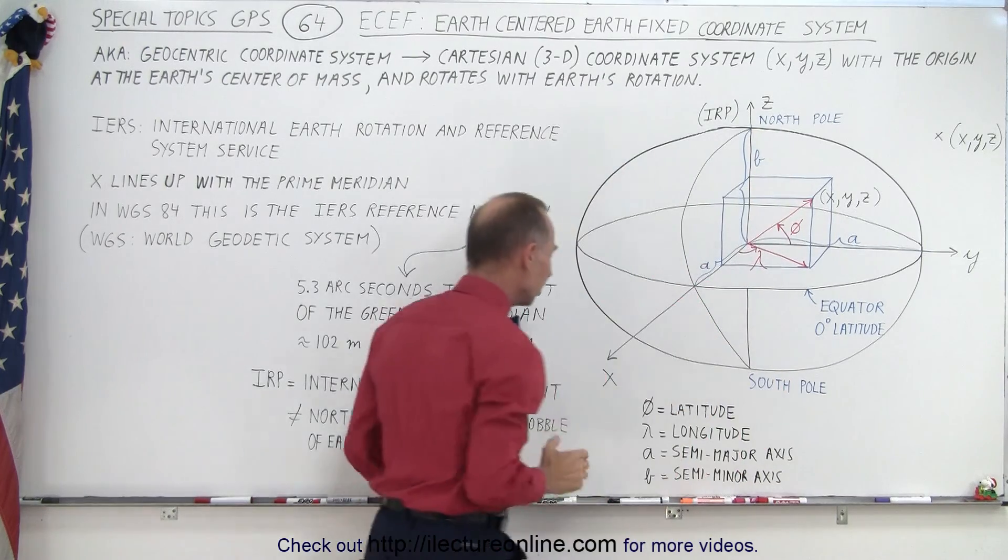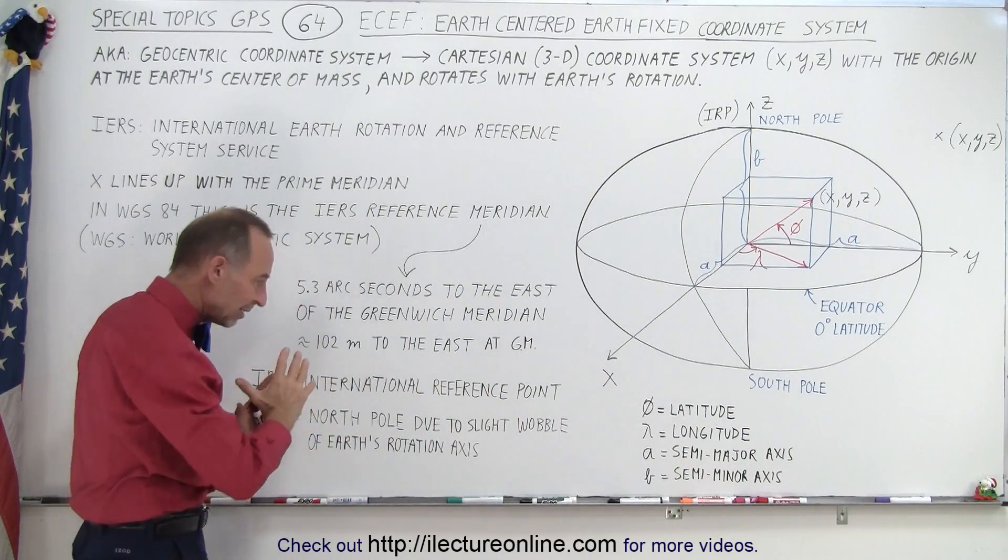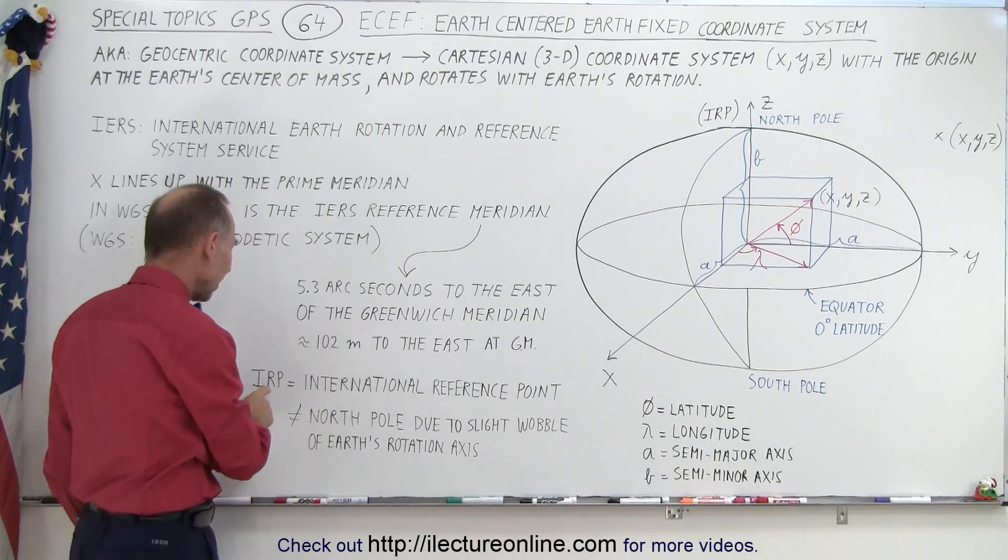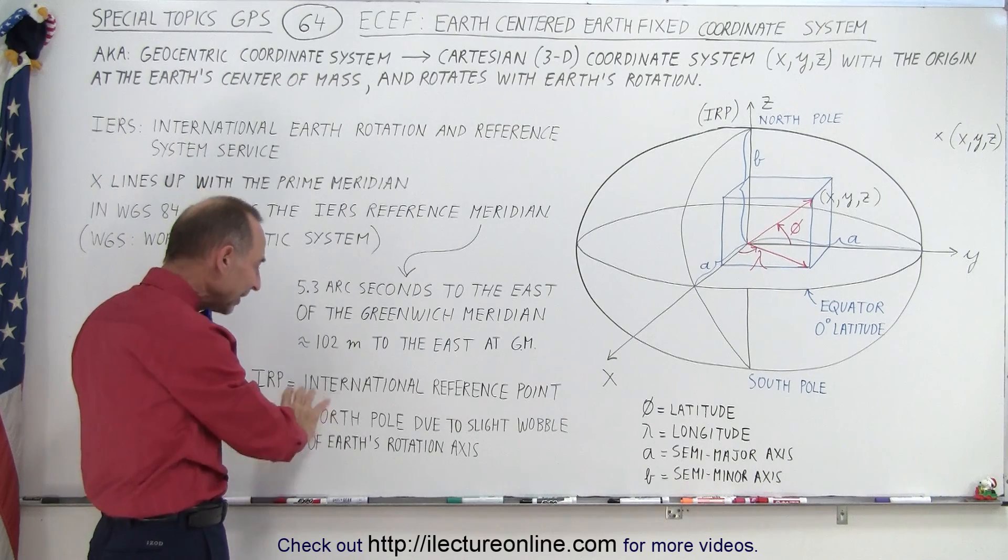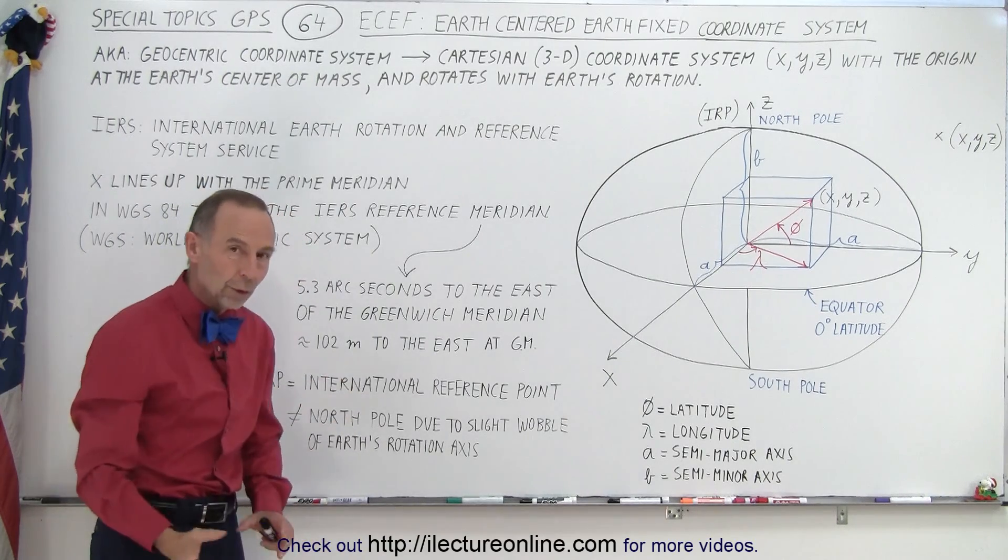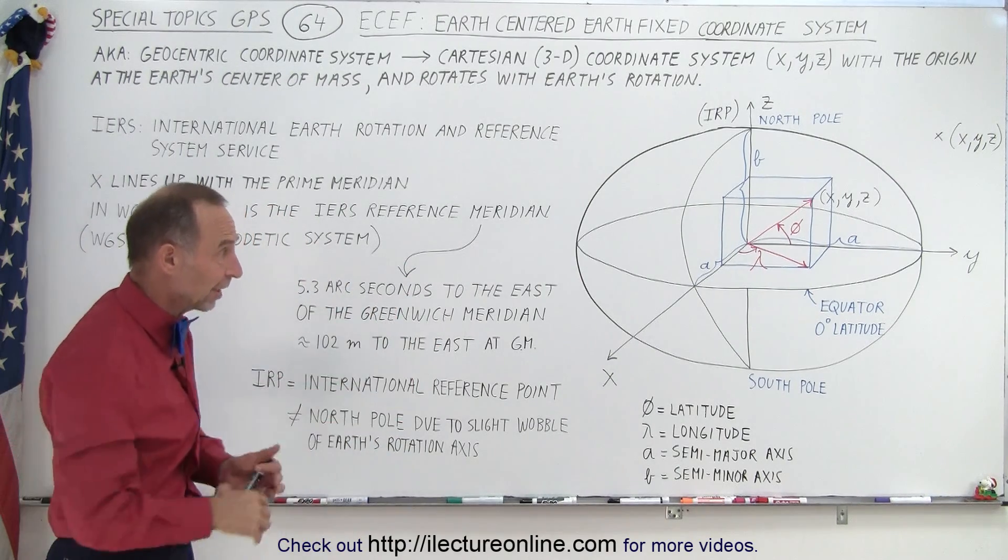So the actual point of reference at the poles is not actually where the exact geographical north and south pole are, it's slightly off and it moves and it varies. So it's actually centered on what we call the IRP or the international reference point, which is not exactly equal to the north pole or the south pole for that matter on the other side.